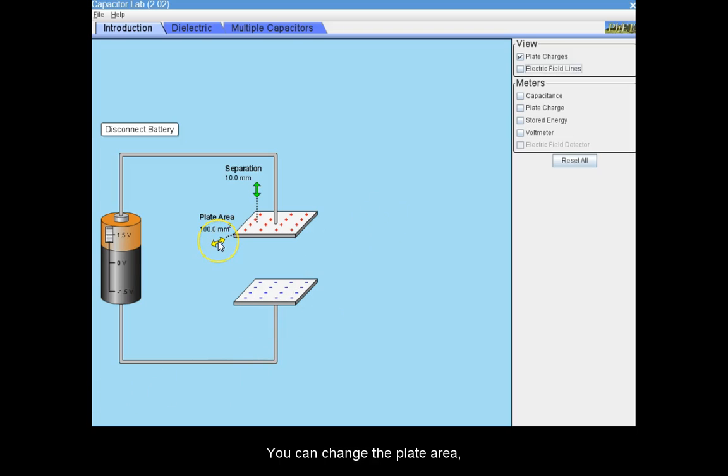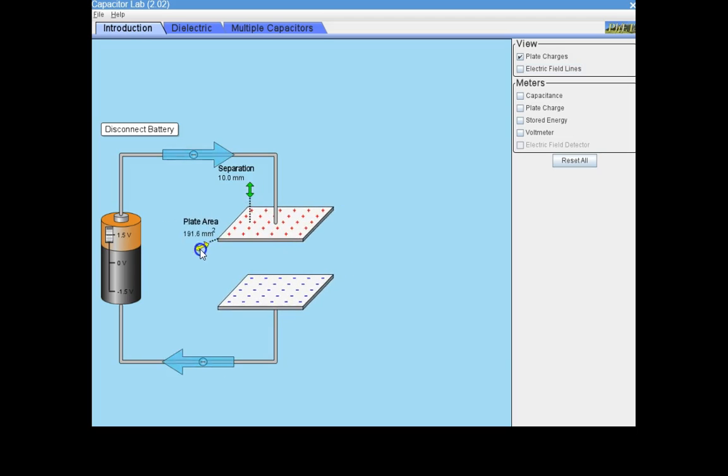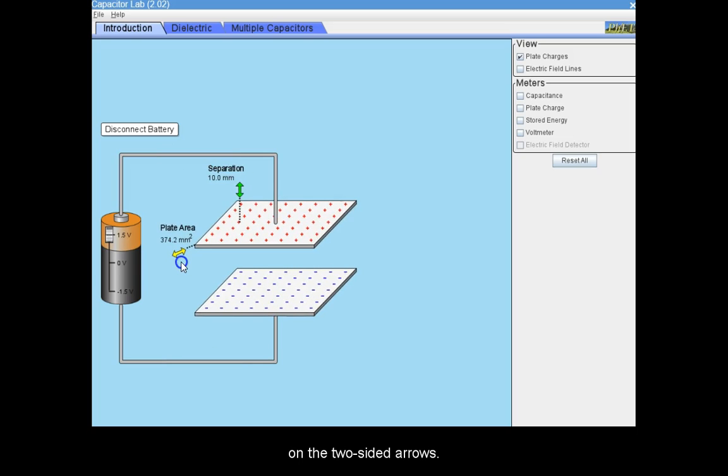You can change the plate area and the separation distance between them by clicking, holding and dragging the other side of the electric field lines by clicking on the two-sided arrows.